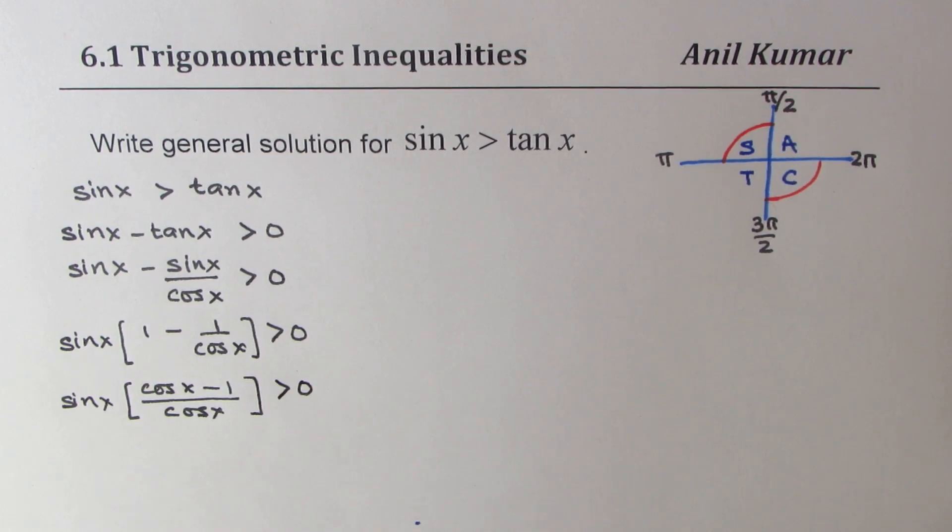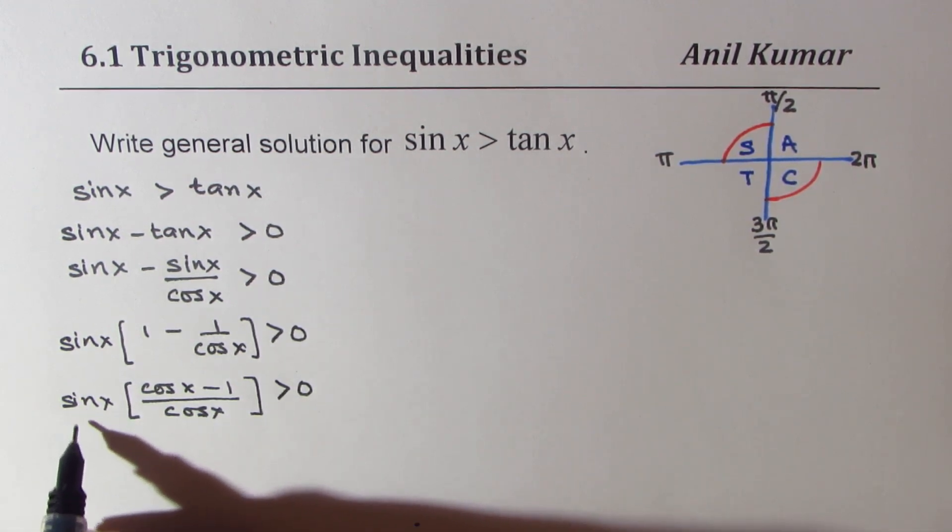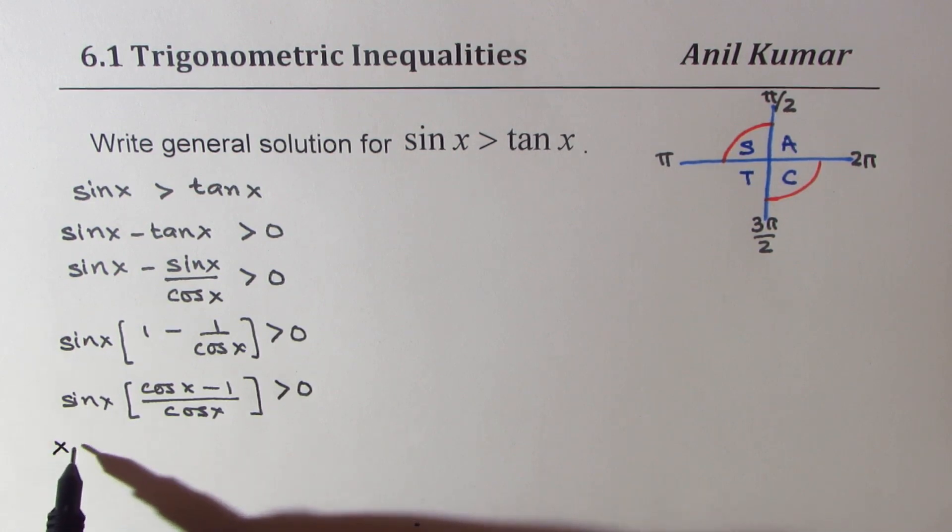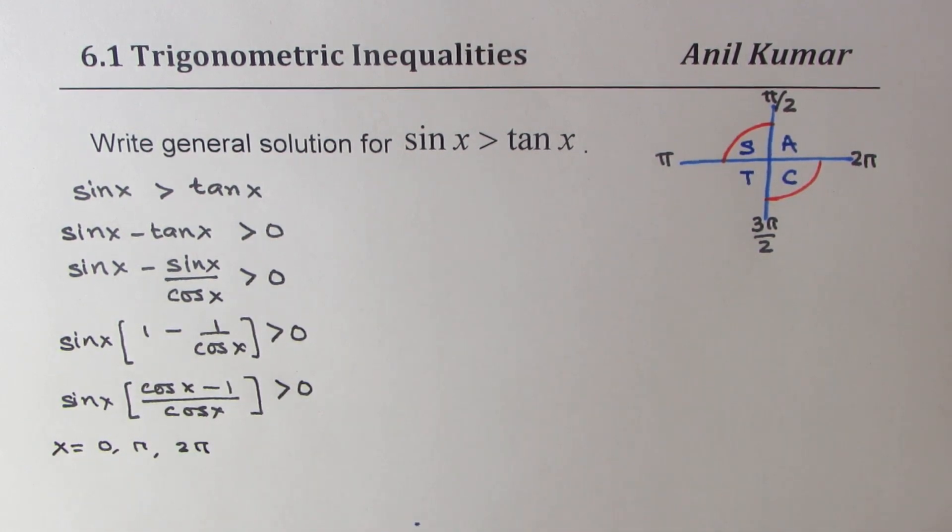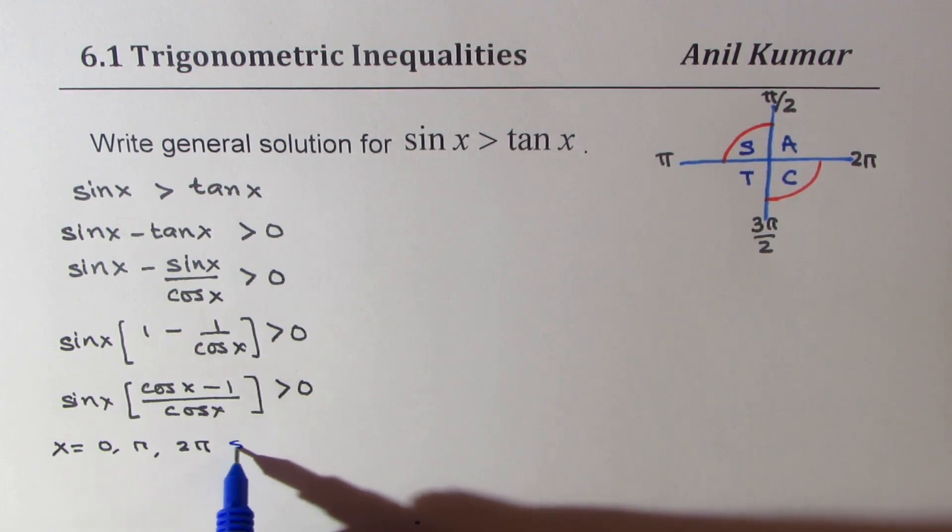The idea here is to write in factored form. Now we are looking into three factors: sin x, cos x minus 1, and cos x. Now, sine x is equal to 0 for x equals to 0, pi and 2 pi. So for these values, we know sin x is 0.